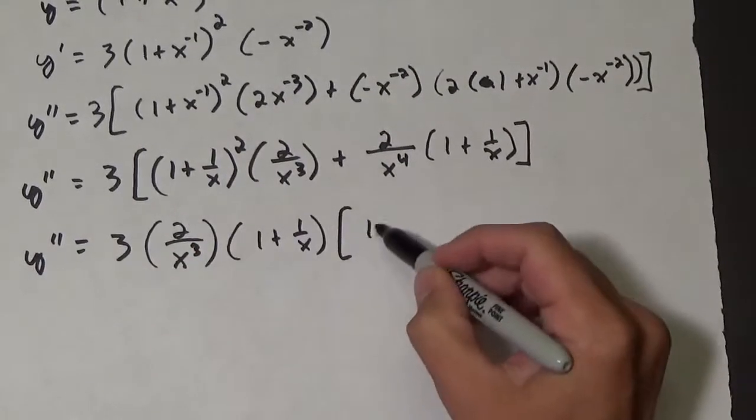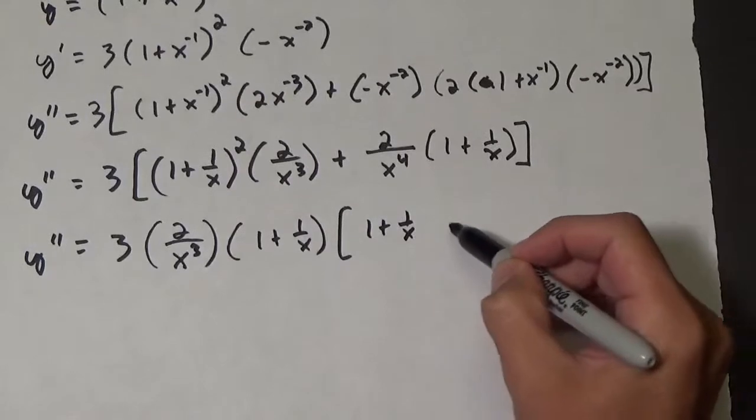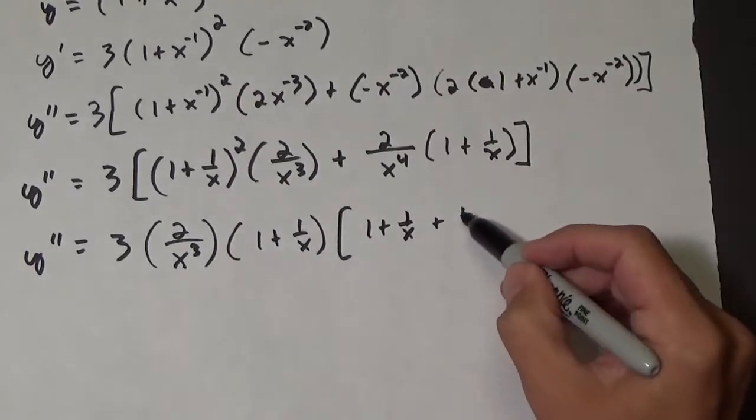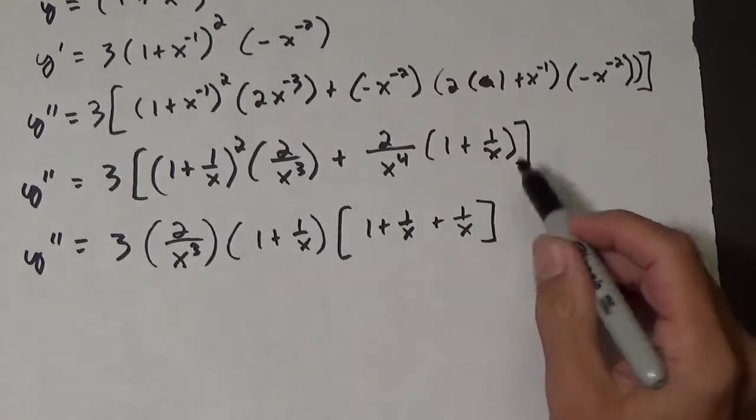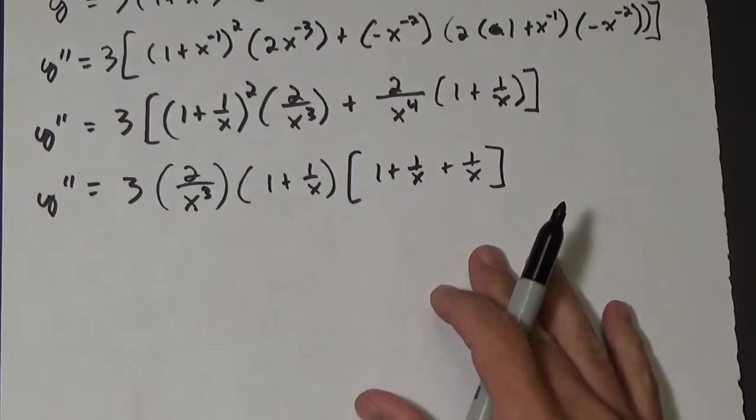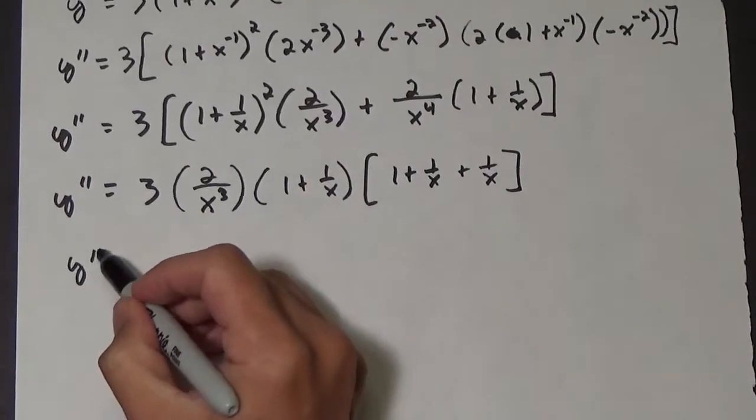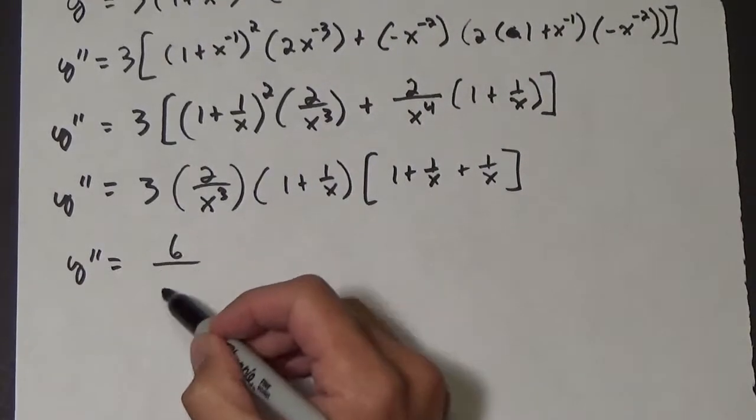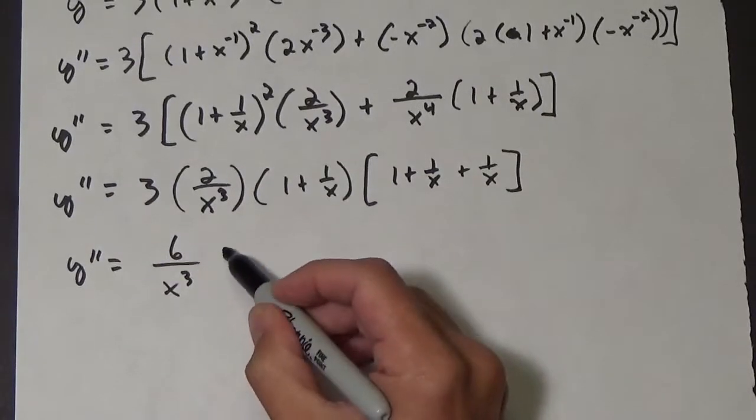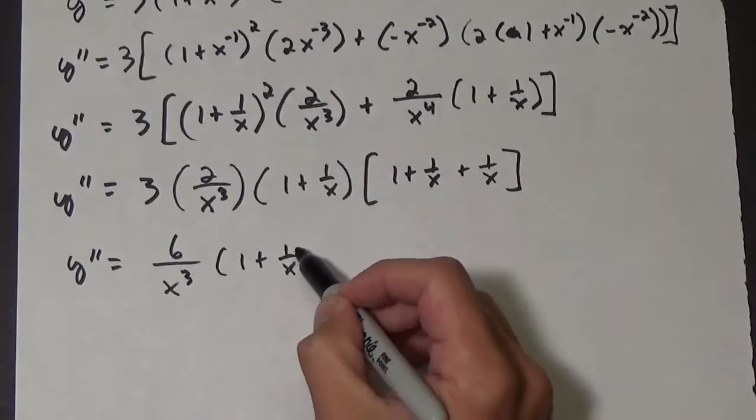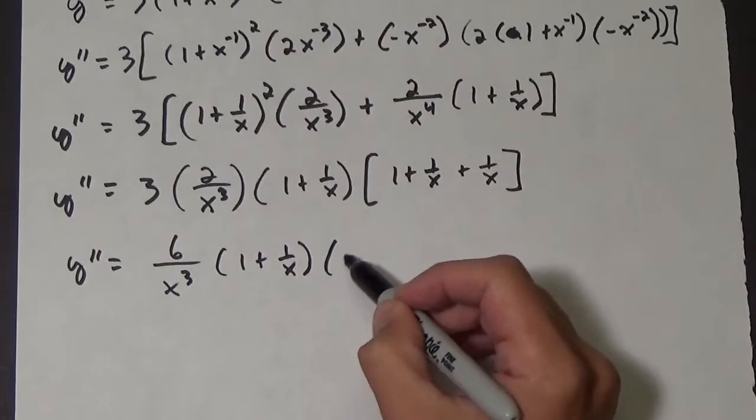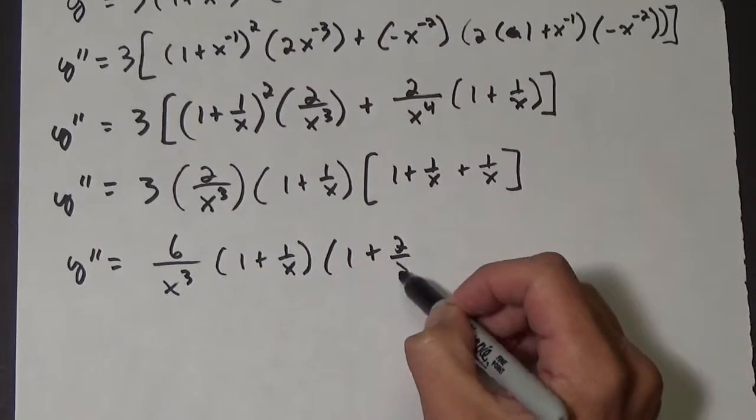And so we have 1 plus 1 over x left, and over here we have plus 1 over x. So I think we're going to end up with y double prime equals 6 over x cubed times 1 plus 1 over x times 1 plus 2 over x.